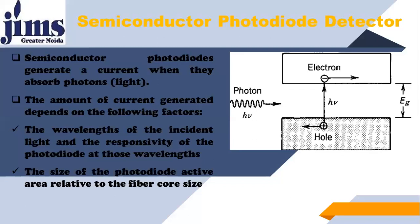There is an energy gap E_g between the valence band and the conduction band. The photon energy H·μ must be greater than or equal to the band gap energy of the material used in manufacturing the detector. The amount of current generated depends on two factors: first, the wavelength of the incident light and the responsivity of the photodiode at those wavelengths; and second, the size of the photodiode active area relative to the fiber core size.